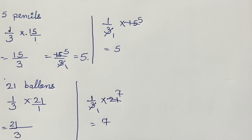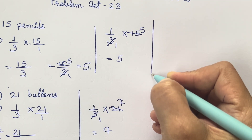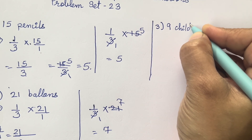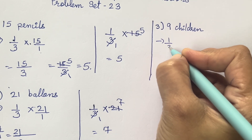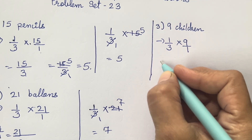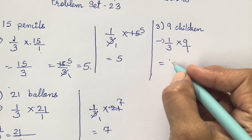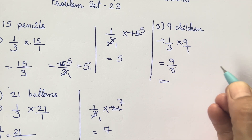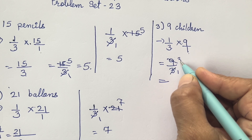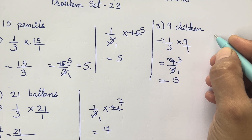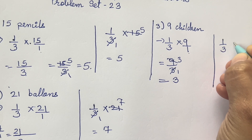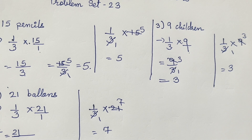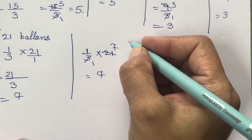Third sum: 9 children. So 1/3 into 9 — 1 into 9 is 9, 3 into 1 is 3. Divide: 3 ones are 3, 3 threes are 9, so the answer is 3. Using the second method: 3 ones are 3, 3 threes are 9 — answer is 3.